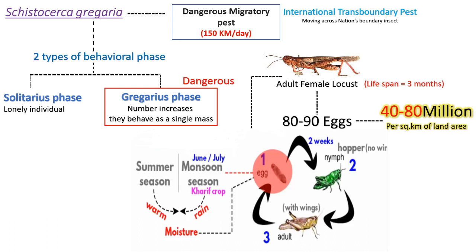That means only fully grown adults are capable of flying. So if you look at the life cycle: first is egg, after two weeks it turns into nymphs, and after two weeks it turns into an adult. The locust starts laying eggs after the monsoon.